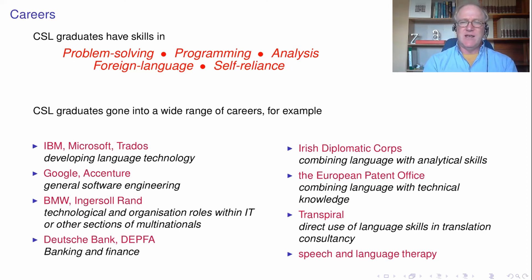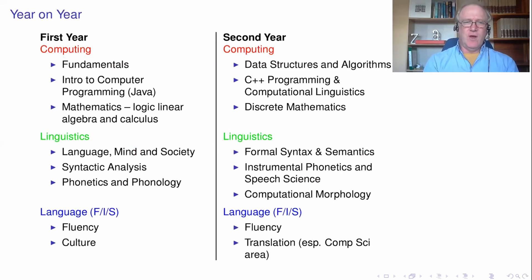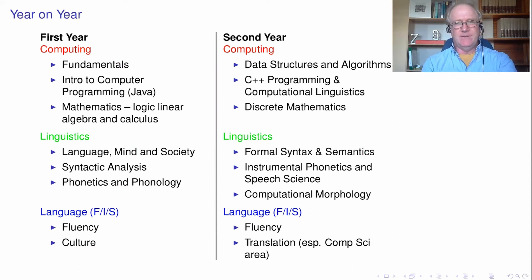There's a list of different destinations graduates have gone to: some have gone into computer jobs with companies like Google, others have ended up working in the diplomatic corps — likely involving their language skills — and people have gone to the European Patent Office, which combines their technological knowledge and language skills. The three parts of the degree run through the entire degree programme.